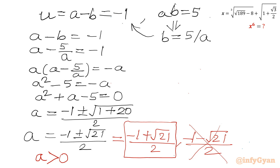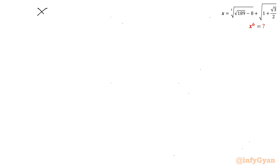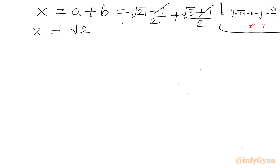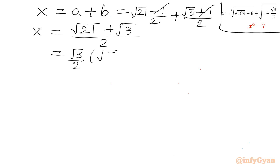Now let us calculate x power 6. We write x equals a plus b, where a is (root 21 minus 1) over 2 and b is (root 3 plus 1) divided by 2. Adding: the plus 1 and minus 1 cancel, leaving x equals (root 21 plus root 3) divided by 2. Taking root 3 common: x equals (root 3 divided by 2) times (root 7 plus 1).